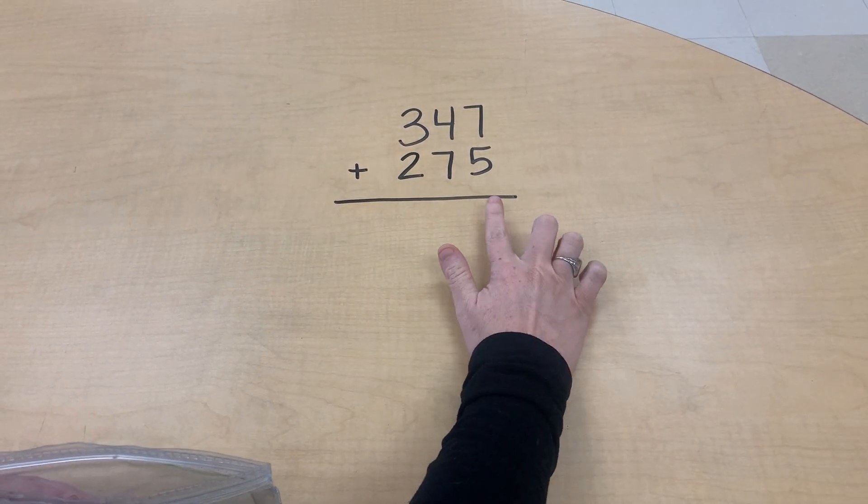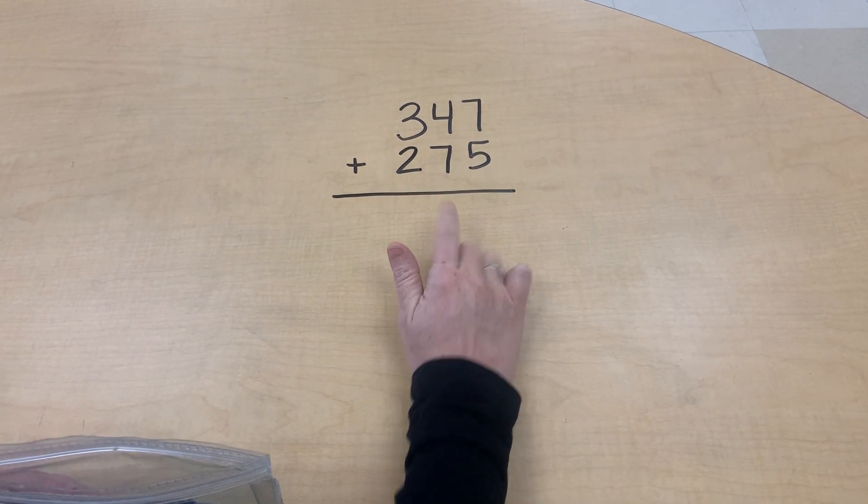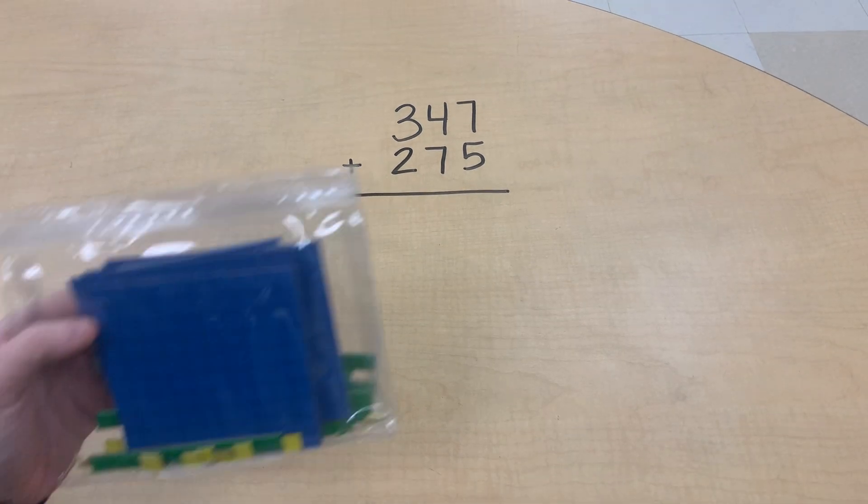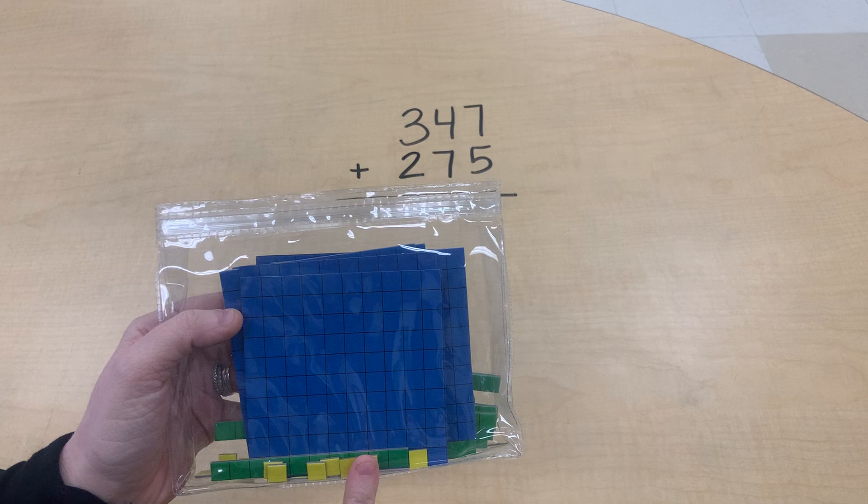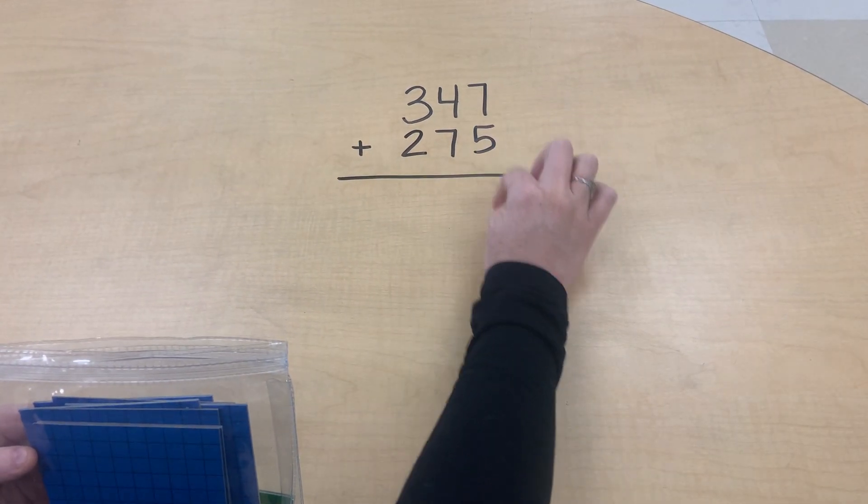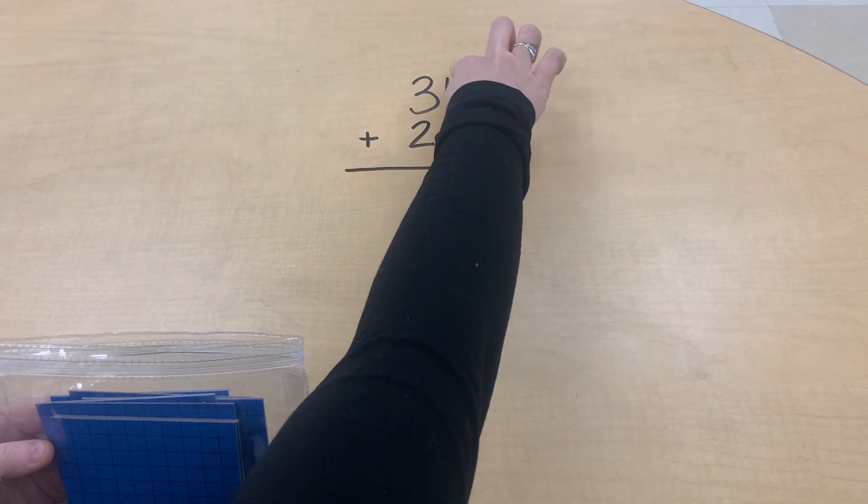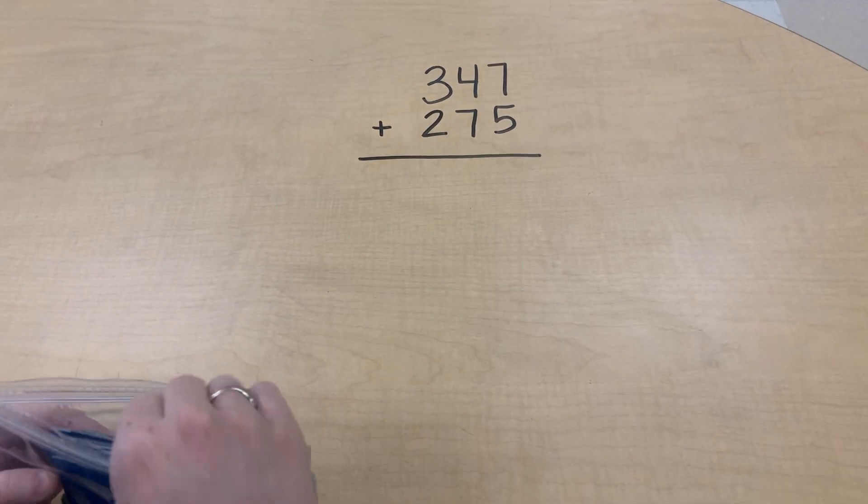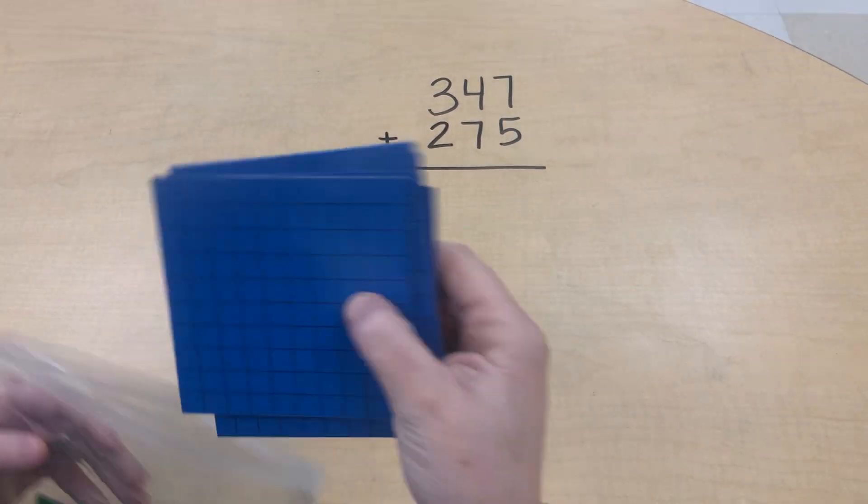So we have regrouping in the ones and tens place in this problem, so you'll be able to see how to use these manipulatives to solve this problem. As you can see, in the problem I've lined up my ones, my tens, and my hundreds, and I will do the same when I compose the two numbers.